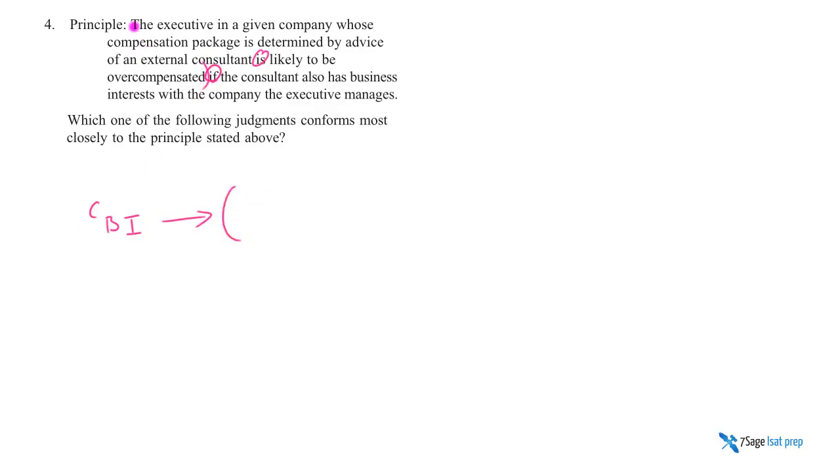You got a consultant as one player. You got a CEO as another player. So the consultant, if the consultant has business interests with CEO's company, you just want to represent a consultant has business interests. The consultant has business interests. That's the if statement. So if this, then what? Well, then this whole thing.